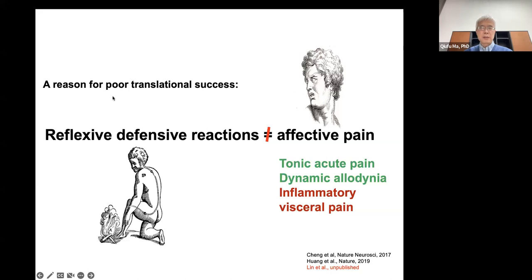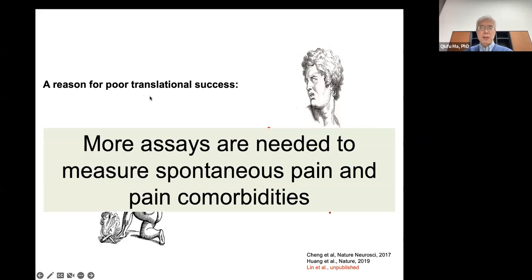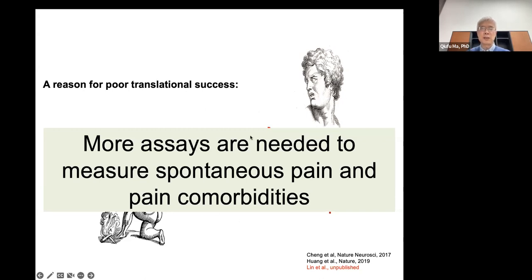From these evoked pain studies, current reflex assays are not able to detect select loss of acute affect pain. In terms of spinal cord substrates, sensitized reflex assays also cannot detect a select loss of dynamic neuropathic allodynia, nor the affective components of mechanical allodynia in inflammatory visceral pain. This is likely one reason for poor translational success. We still have limitations — we need more assays to measure spontaneous pain and pain comorbidities like anxiety, depression, and cognitive deficits. Recently, spontaneous guarding or licking behavior, and Jeff Mogil's facial grimace scale, have been proposed as potential measures of spontaneous pain.